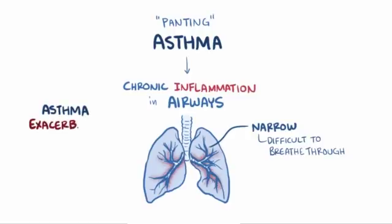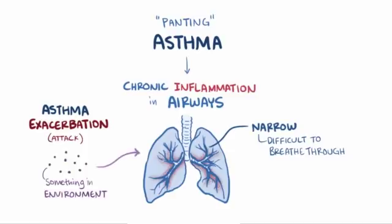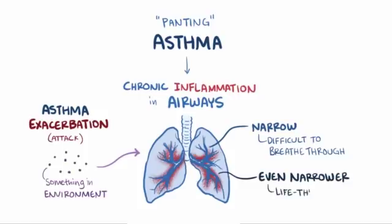People with asthma can have asthma exacerbations or asthma attacks, which are usually triggered by something in the environment which causes immune cells to generate inflammation in the lungs which can make them even narrower and potentially be life-threatening.